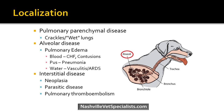For parenchymal disease at the alveoli — where the majority of problems occur — you'll hear crackles or wet lungs. You can have disease within the alveoli itself. Pulmonary edema is most common. Think simply about what can be in that airway: blood (heart failure, contusions from trauma), pus (pneumonia), or water (vasculitis, ARDS). The interstitium is the area between the alveoli and bloodstream. Things typically start in the interstitium before getting into the alveolus. Neoplasia, parasitic disease, and pulmonary thromboembolism can also occur in the interstitium.